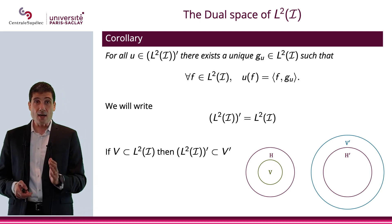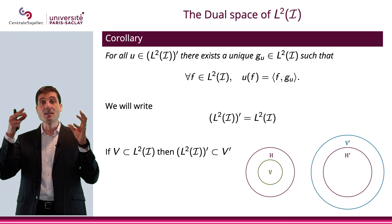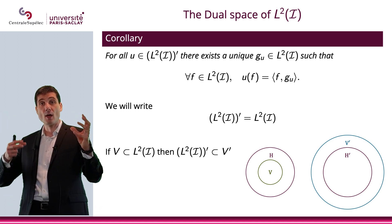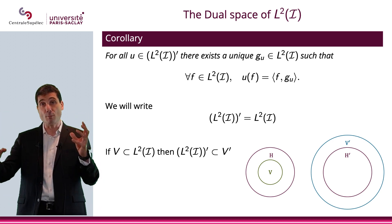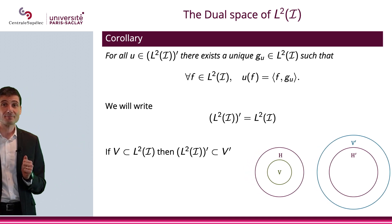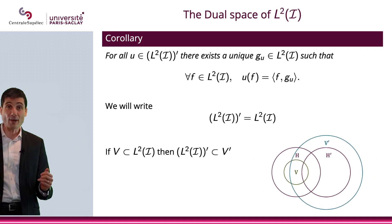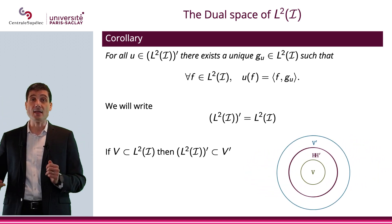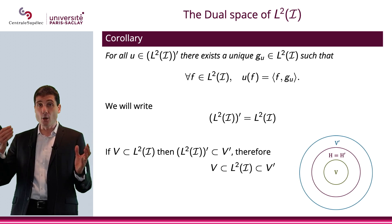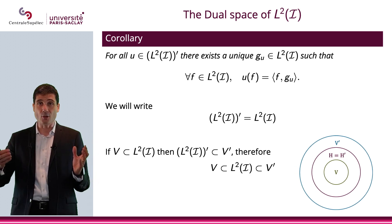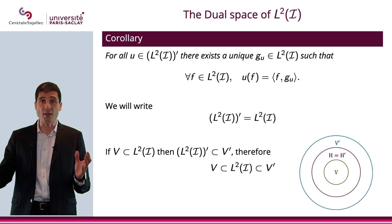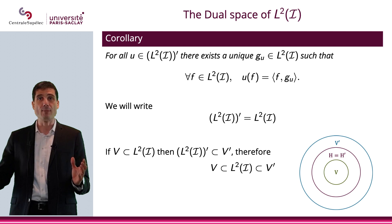Since we have identified L2 and L2 prime, here is what we have: V is included in L2, which is included in V prime. L2 will be called the pivot space.